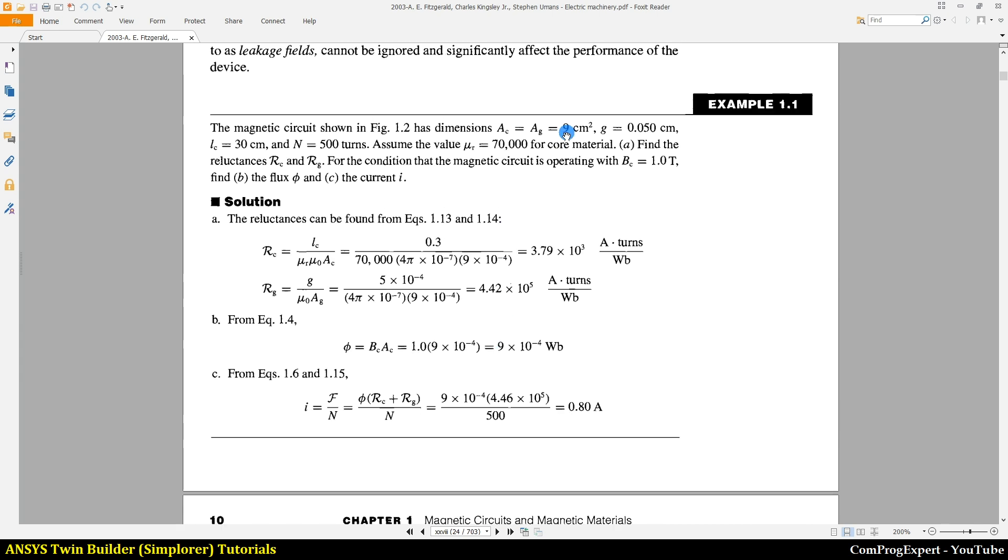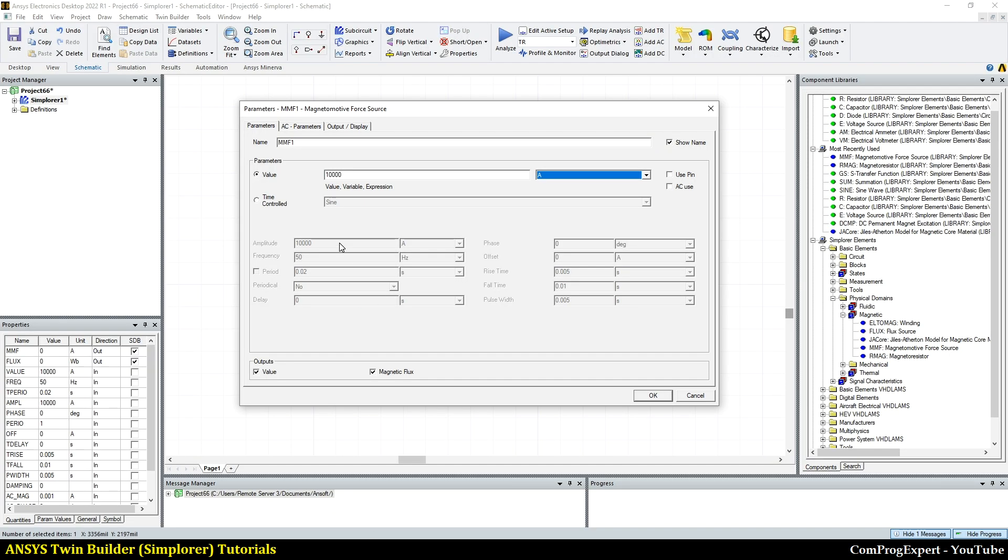In this example, the areas are given and the relative permeability is given. The aim is to find the value of the current that generates this flux. But I am going to consider this current and solve the circuit and calculate the value of flux. The number of turns is 500, and the value of current is 0.8. So here I write 500 times 0.8.